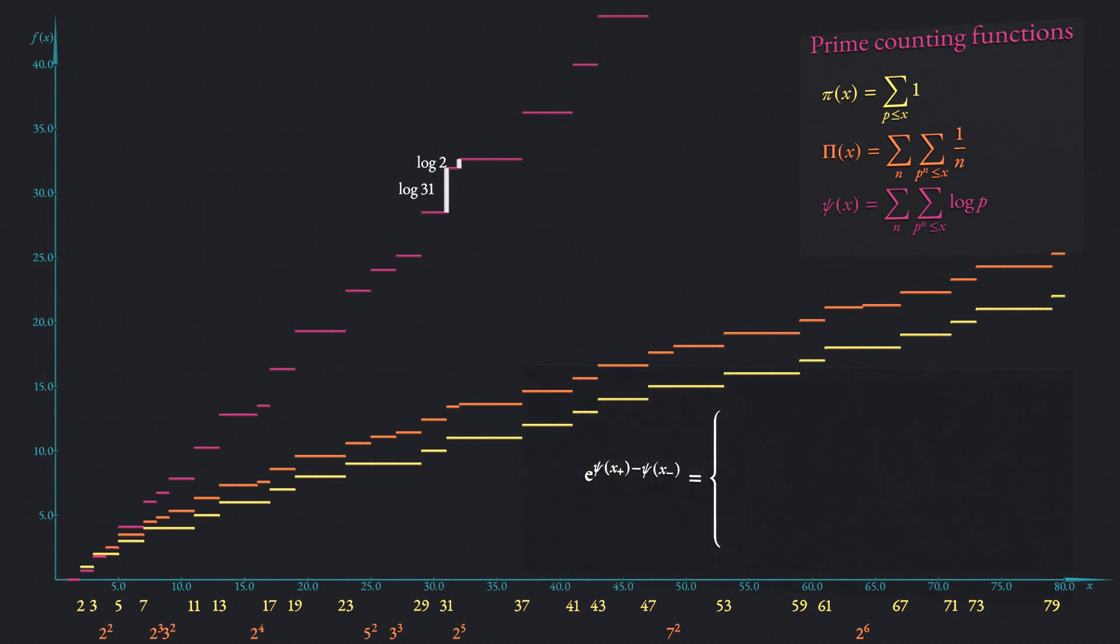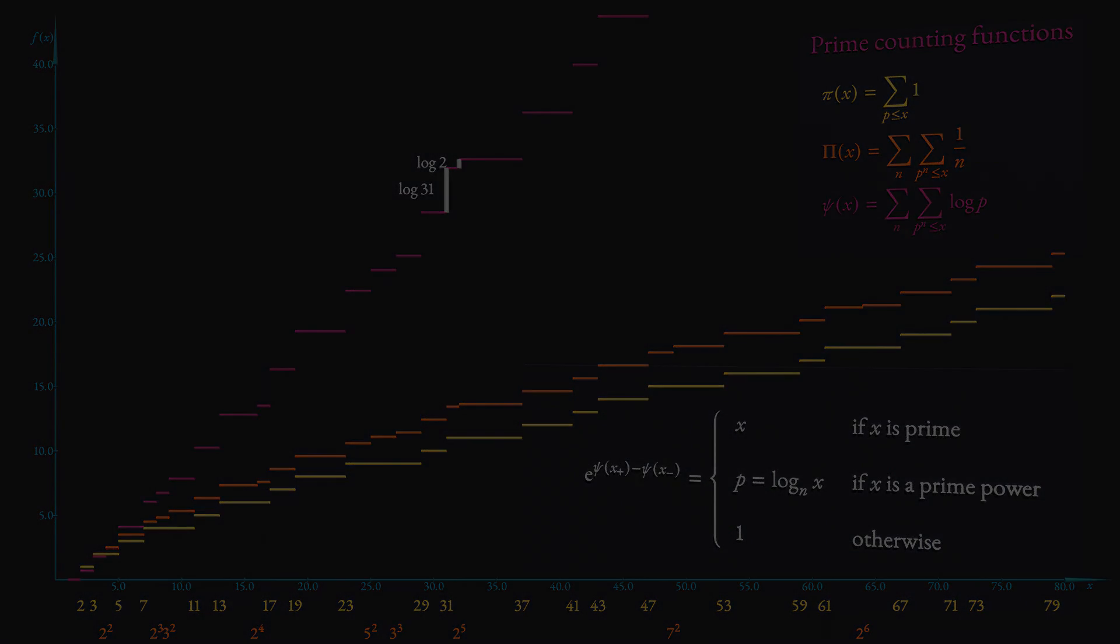Although it is not very intuitive at first sight, this function can be used to determine the property of an unknown number x. If the exponential of the step size is equal to x, then x must be a prime number. If the exponential of the step size is another prime, then x must be a power of this particular prime. And if the exponential of the step size is 1, then x is a composite number. Interestingly, as you've seen, this function on average grows linearly and it can be expressed by the zeros of the zeta function in a very elementary fashion.